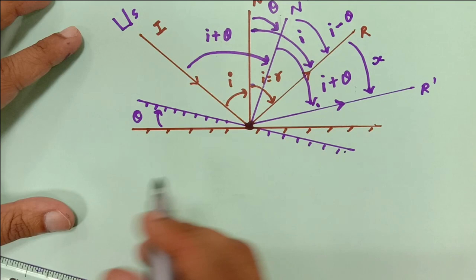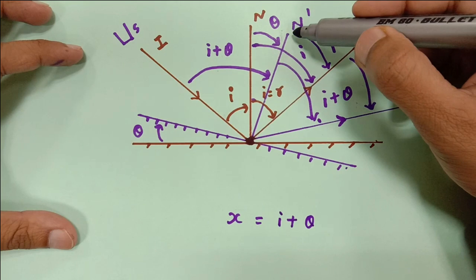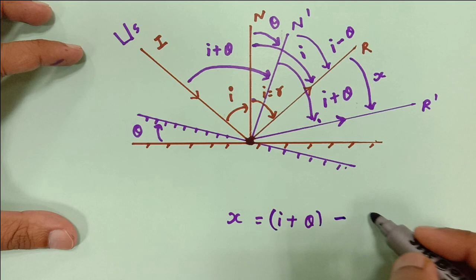So I would be getting this angle. If I subtract this angle from the whole angle, I will be getting this angle. This is I plus theta minus I minus theta.